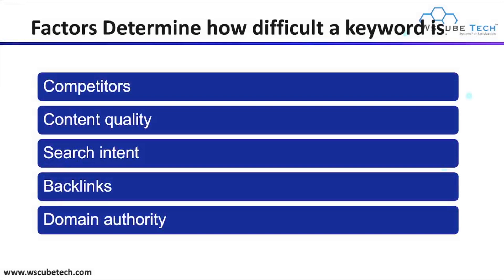What are the factors that determine how difficult a keyword is? We can determine keyword difficulty on the basis of these factors. First is competition — if your competition is high on a particular keyword, you will have higher keyword difficulty, because your competitors are using that keyword to rank their website.